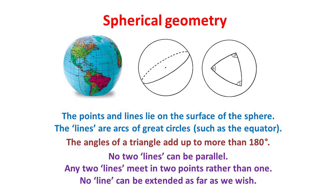Are there any other types of geometry? How about the geometry of the globe? Here the points and lines lie on the surface of a sphere. The lines connecting pairs of points are arcs of great circles, such as the equator, as shown here. This is a different type of geometry, in that any triangle formed by three of these great circle lines has angles that add up to more than 180 degrees. And it's not a proper geometry in Euclid's sense either, because it breaks several basic rules. For example, no two of these lines can be parallel, and any two great circle lines meet in two points rather than one. And we can no longer extend any line as far as we wish, as required by one of Euclid's postulates.